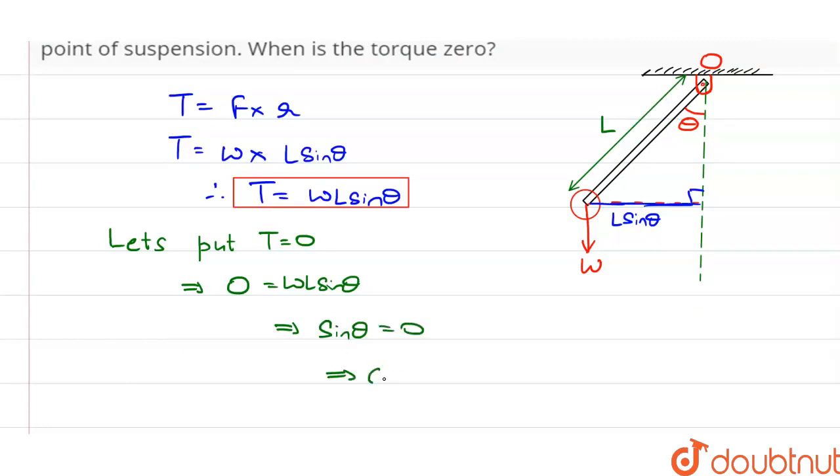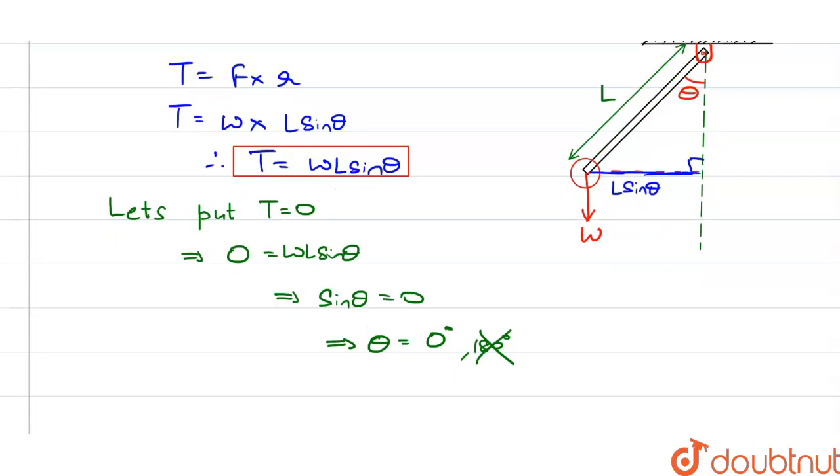And the values of theta for sin theta equal to zero are zero degree and 180 degree. But since in this arrangement it is impossible to get 180 degree, we won't be considering 180 degree as our answer. So the final answer is theta is equal to zero degree. This means that the pendulum should be vertical to get torque equal to zero.